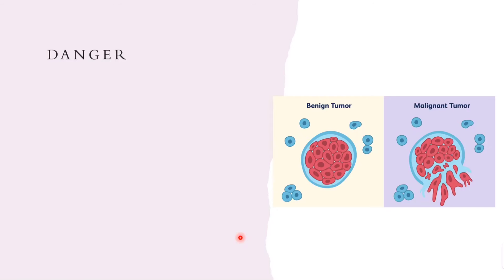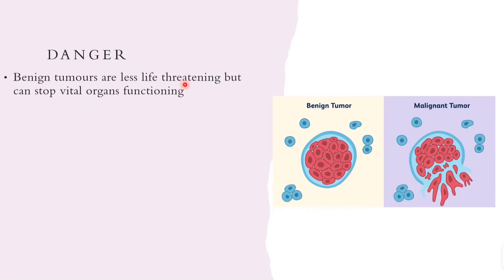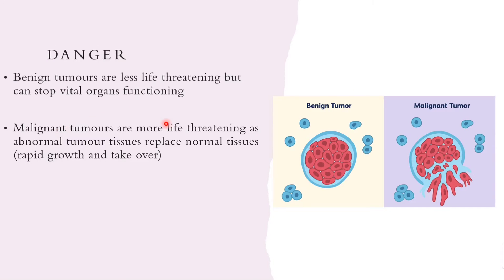Benign tumors are less life-threatening, but they can stop vital organs from functioning. Even though they stay in one tissue, if that tissue is a vital organ, this can be very detrimental to its functioning. Malignant tumors are more life-threatening because the abnormal tissues replace normal tissues. Since malignant tumors grow rapidly and cells divide very quickly, these tumor tissues can replace normal tissues in multiple parts of the body as they metastasize.